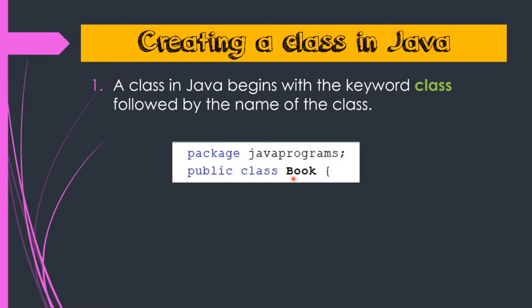Basically, whenever we want to create a class in Java, we have to use a keyword which will indicate that a class is going to be created. For this purpose, we have to begin the class in Java with the keyword class followed by the name of the class. You can see here we have used the keyword class and after it we have written the name of the class which is book. This is indicating that we are going to create a class in Java and the name of this class is book.